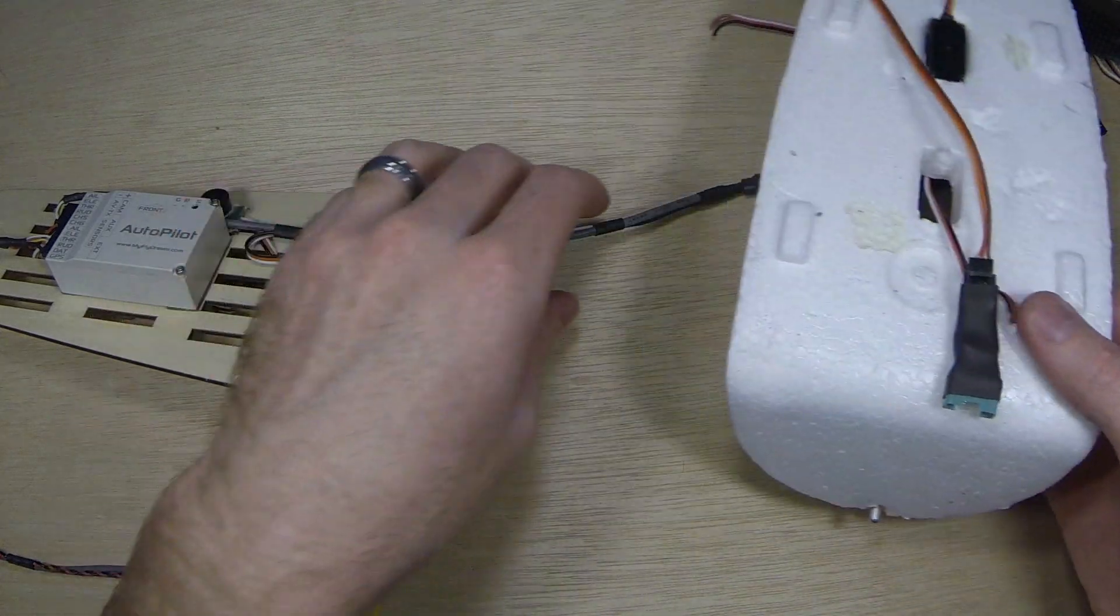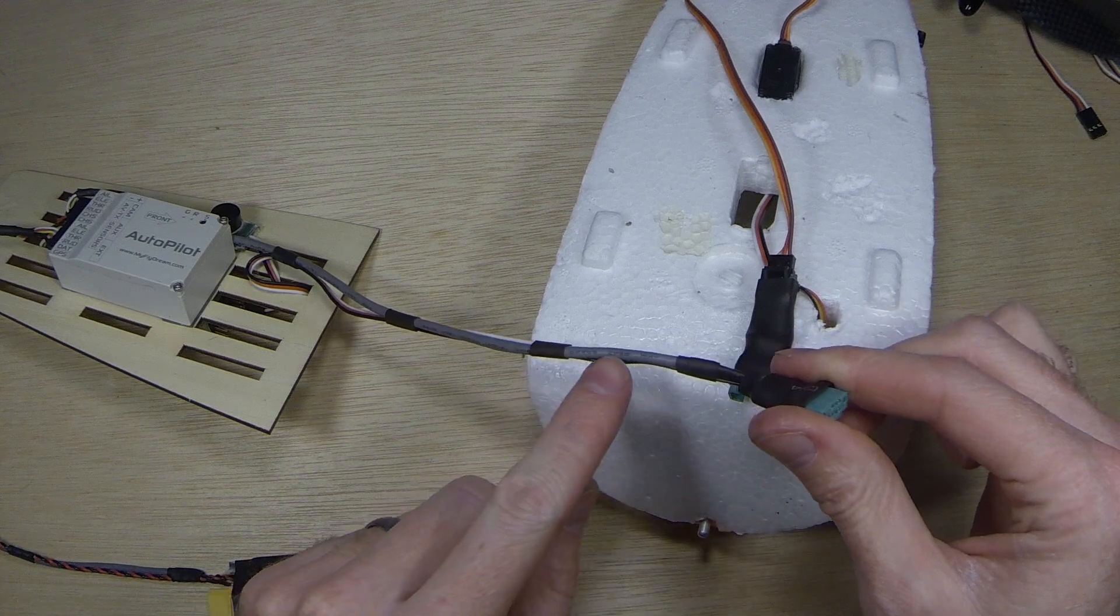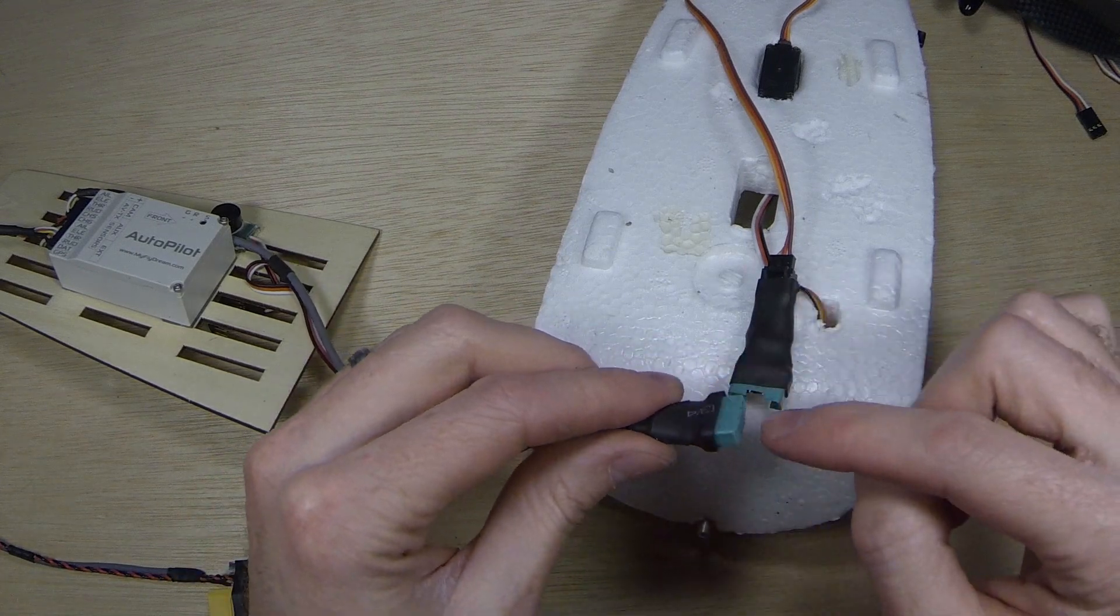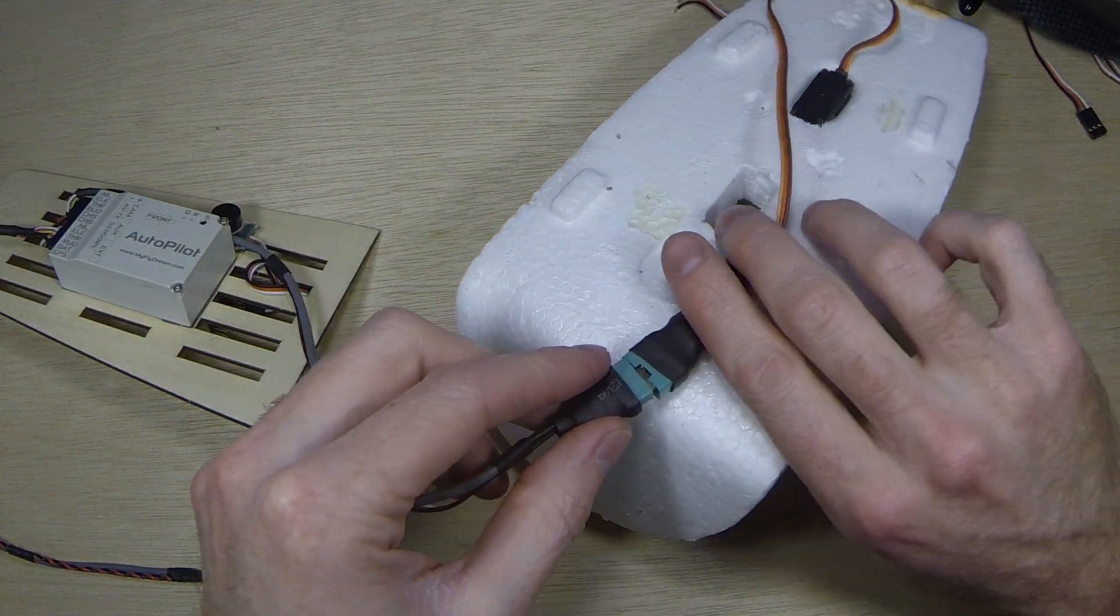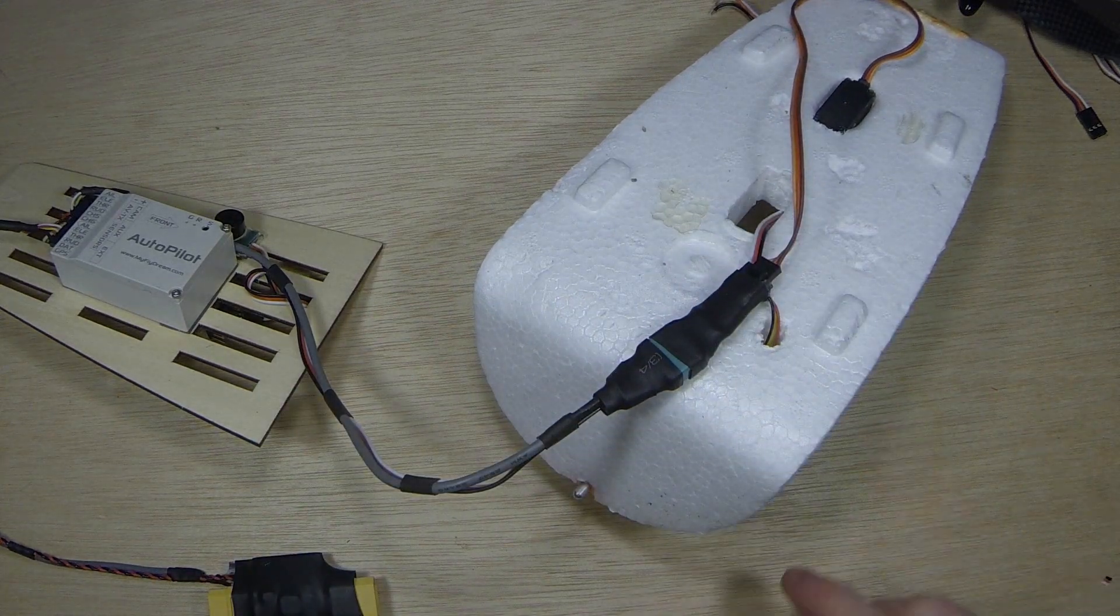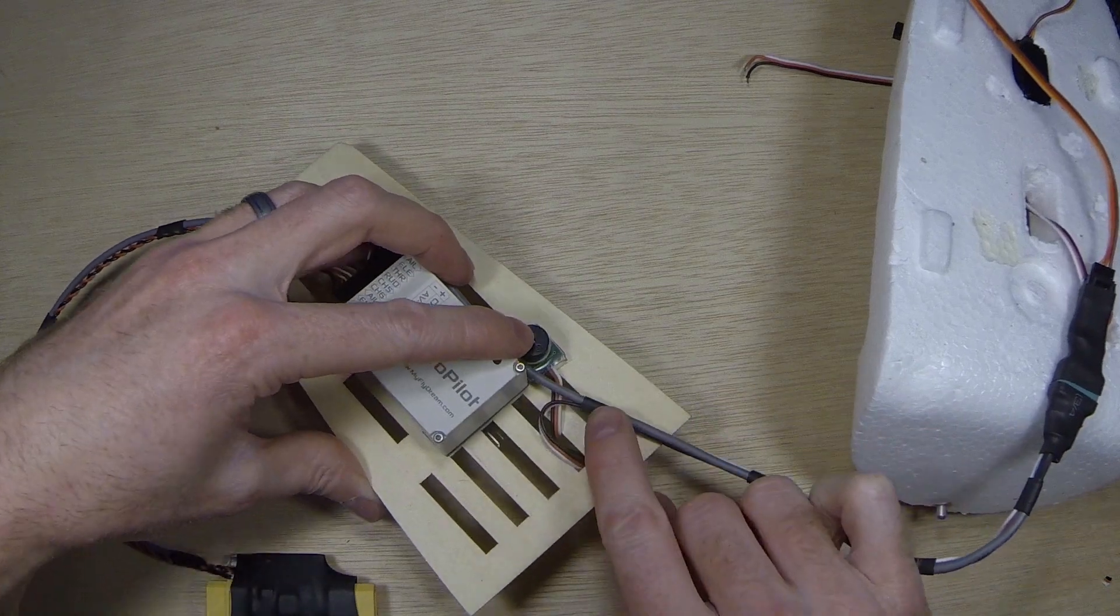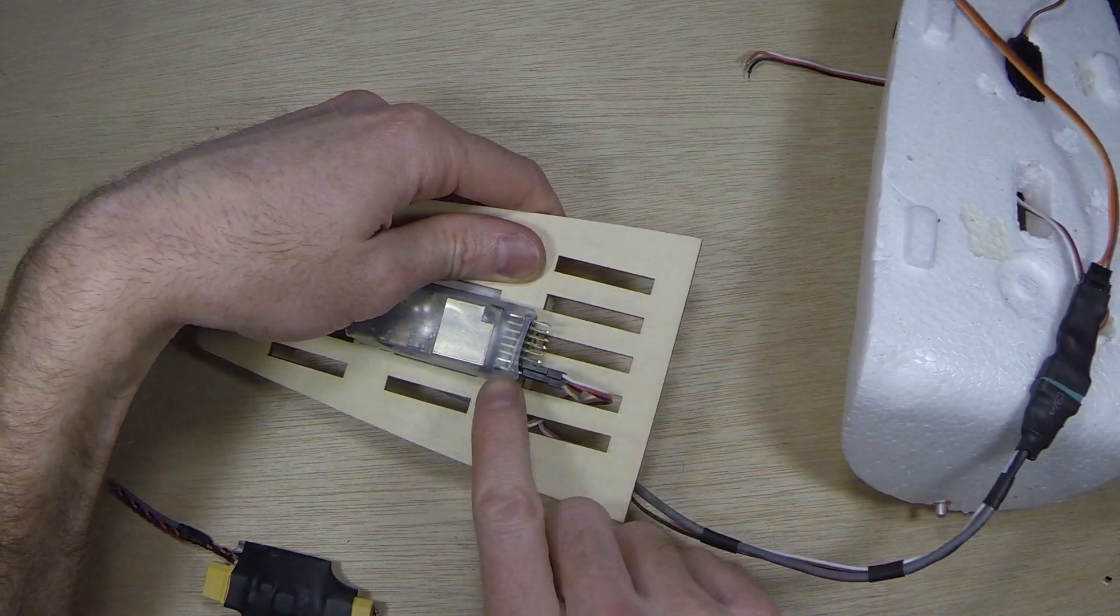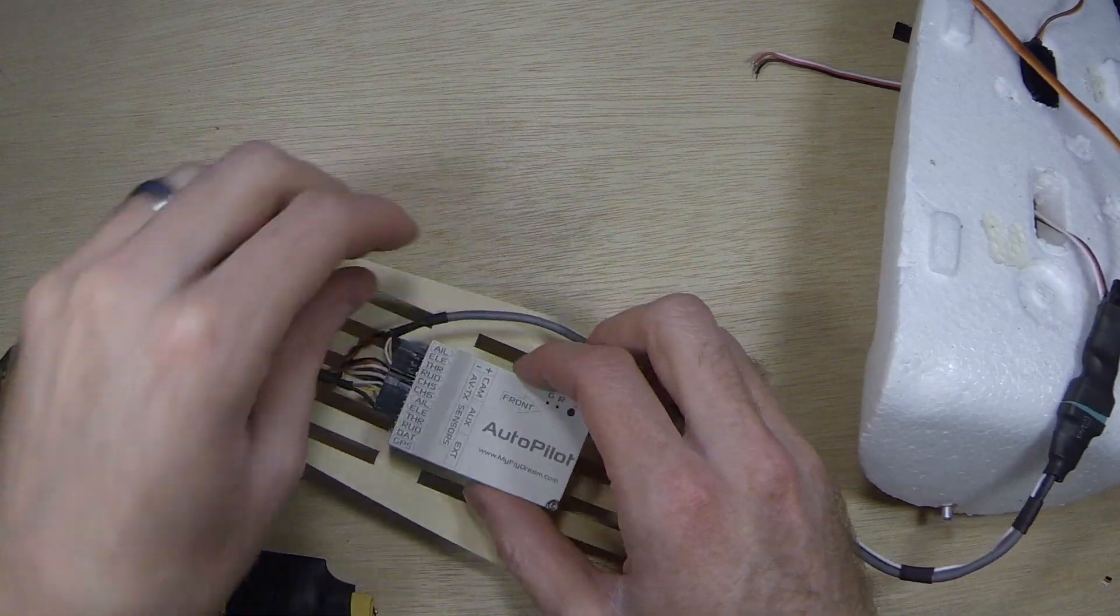And then what I did on here is the video I used the MyFlyDream shielded cable and connect it in here. And I have a servo connection in here. So those lock together. Single connection for the entire pod to go. And you can see down here it splits off. Runs into my receiver. And then runs into here.